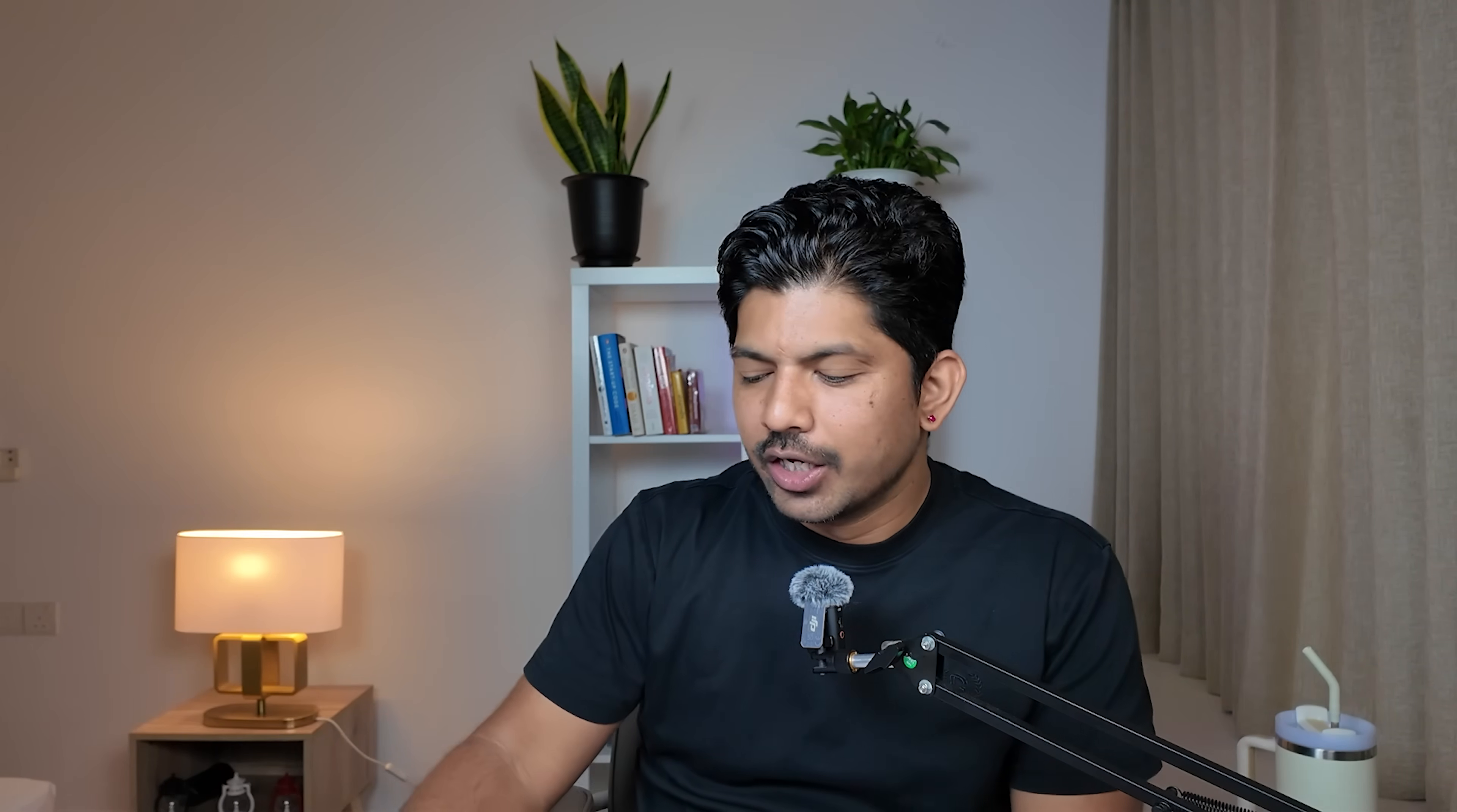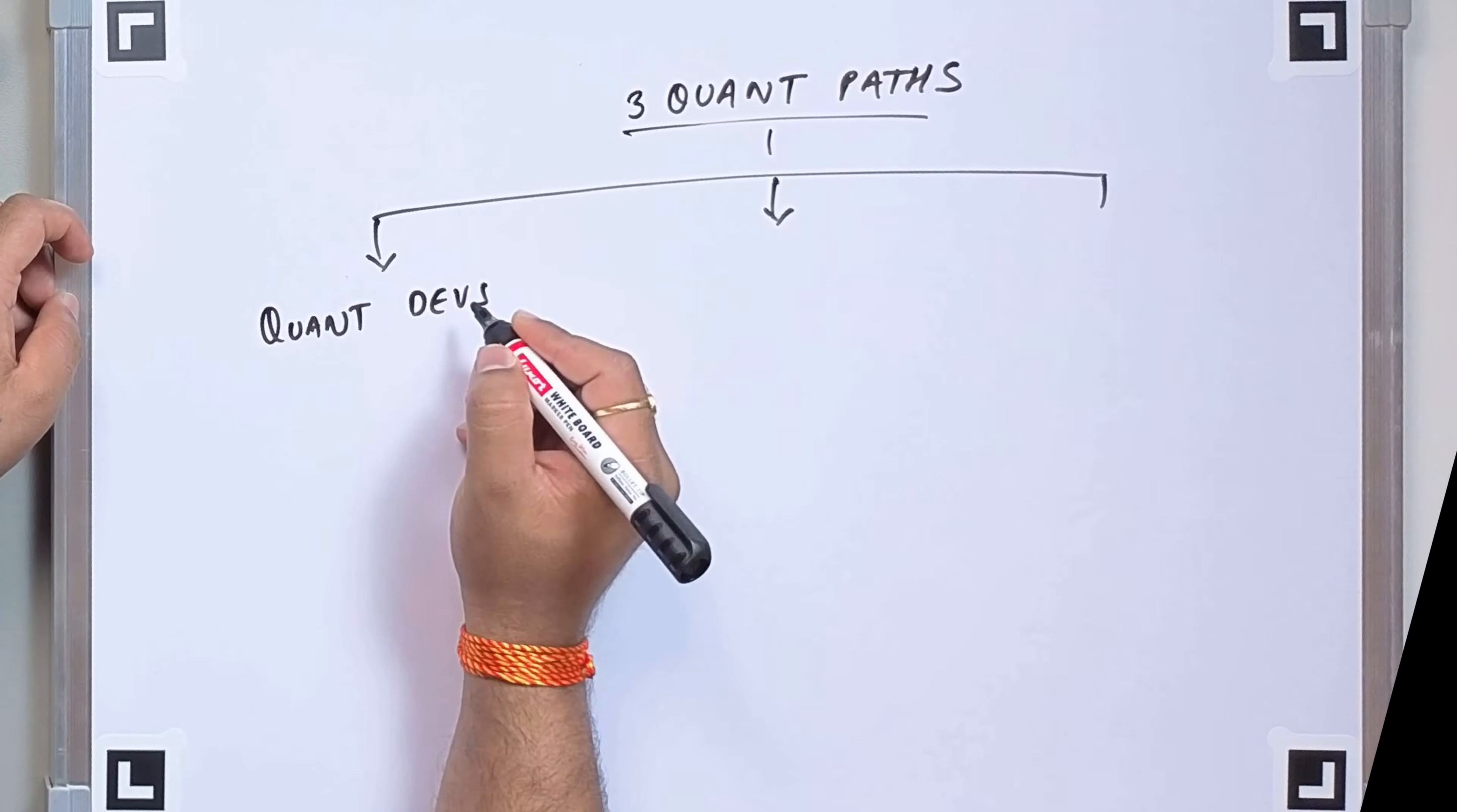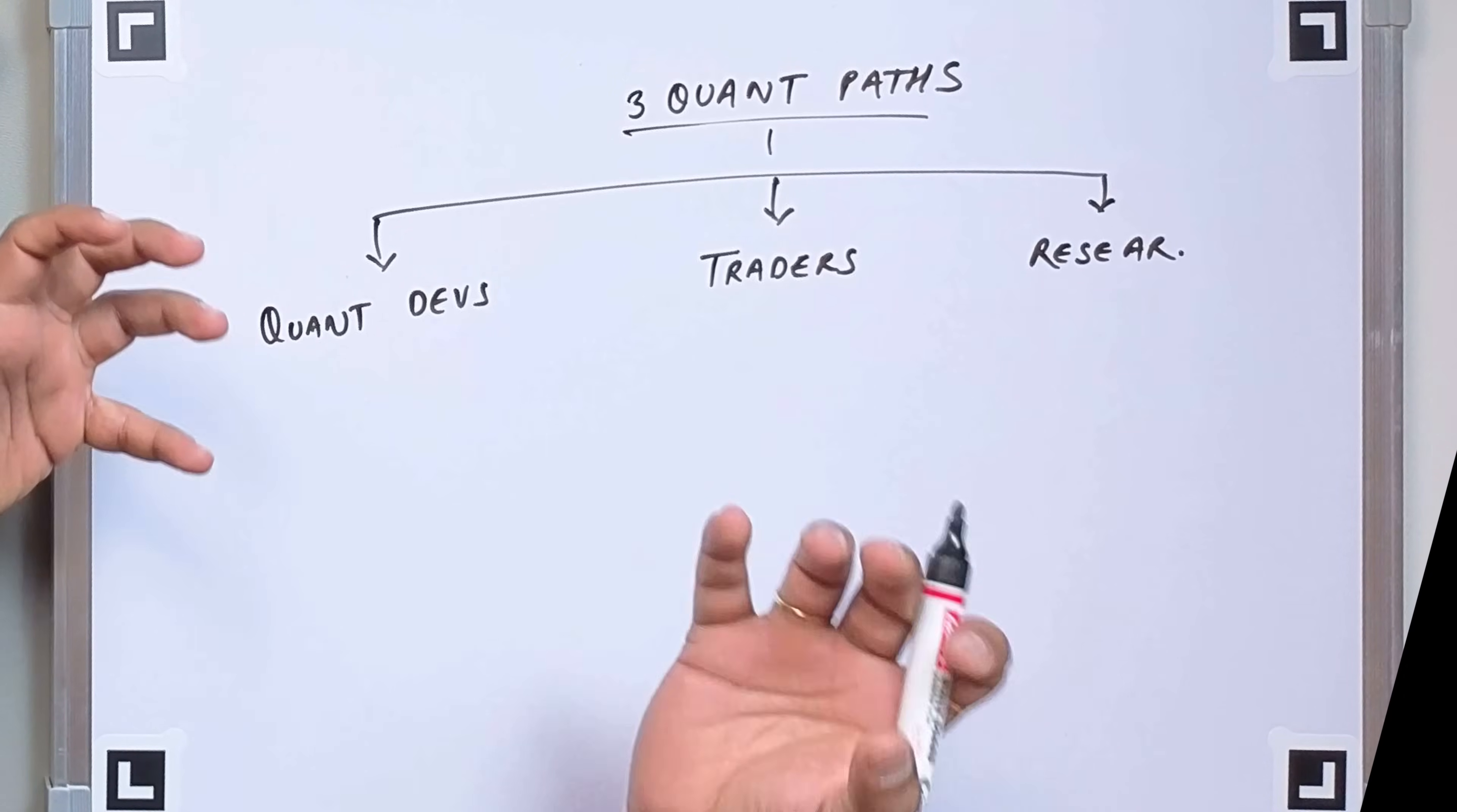The quantitative finance world isn't monolithic. Think of it as three interconnected kingdoms, each requiring its own specialized skills and mindset. So we can divide this into three parts. The first will be quant developers. In short, I can write quant devs. The second would be quant traders. And the third will be quant researchers. So these are the broad categorizations.